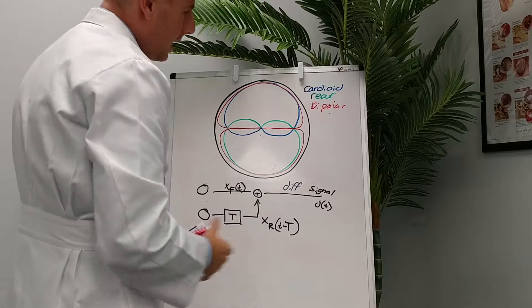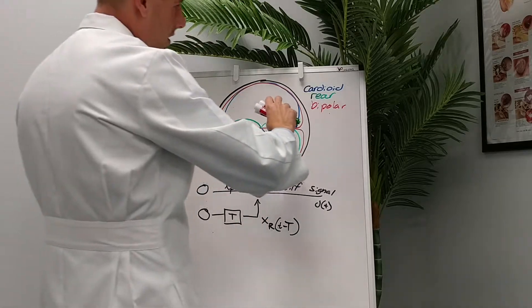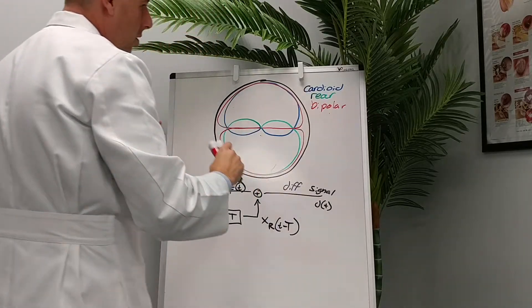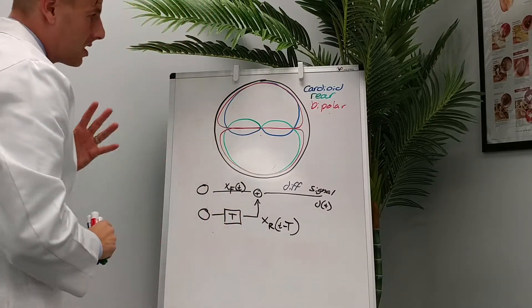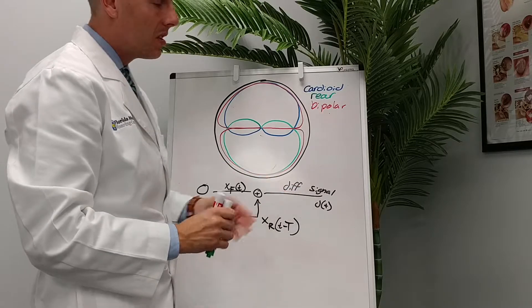And so there's a lot of names for them. We have just the regular cardioid, rear cardioid, bipolar, and we'll go over some of the simplistic ones, or I should say the most common ones.